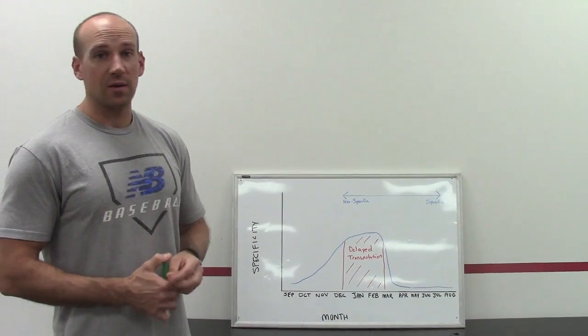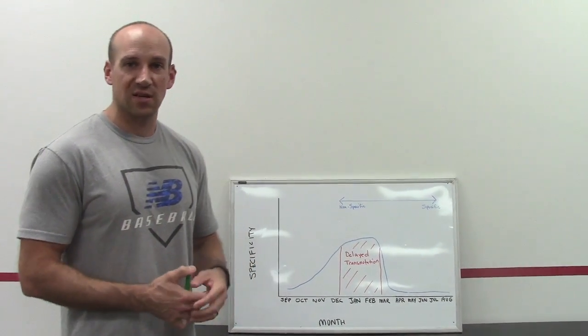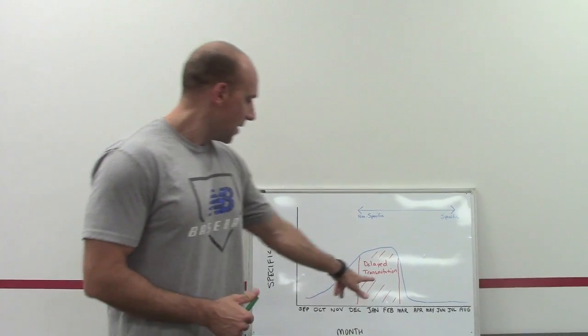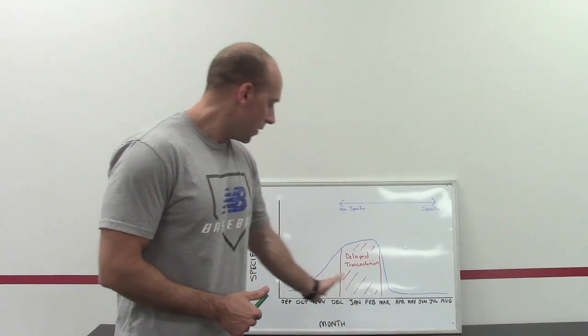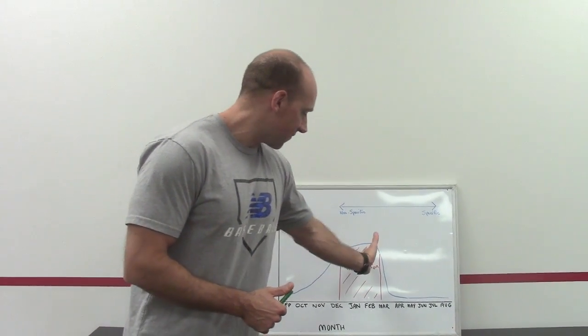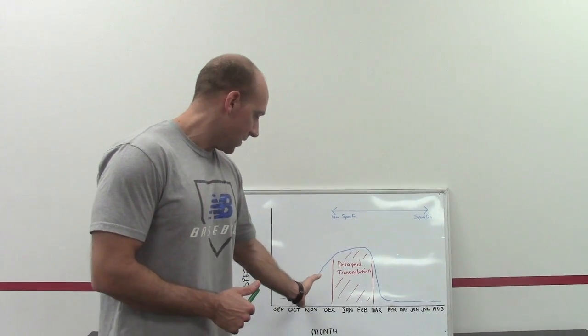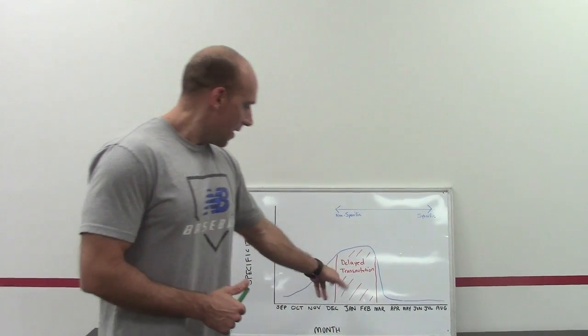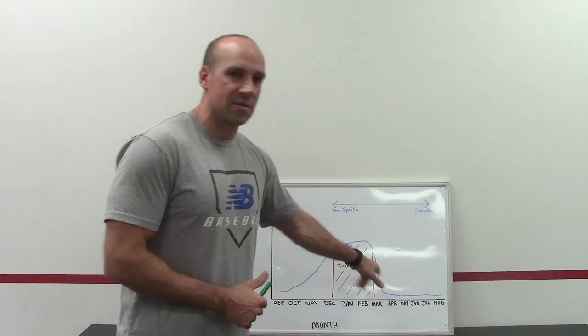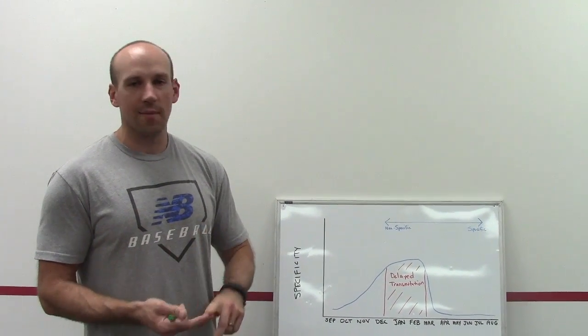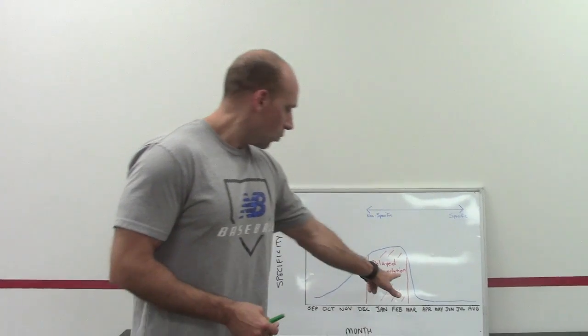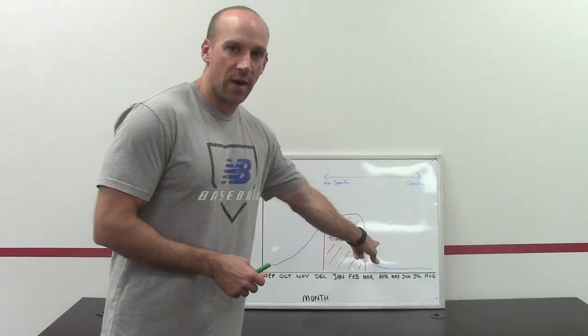So if we've got a career big leaguer who's thrown 200 innings, 5, 6, 7 times, has really been through the ropes, this is probably going to be a smaller pool. We might be able to push a lot of this stuff further along in the off season because the big league season ends a little bit later and maybe we know it doesn't take him quite as long to find his mechanics. Maybe he's already got elite arm speed, high level performance, so we can work in a much smaller window there.